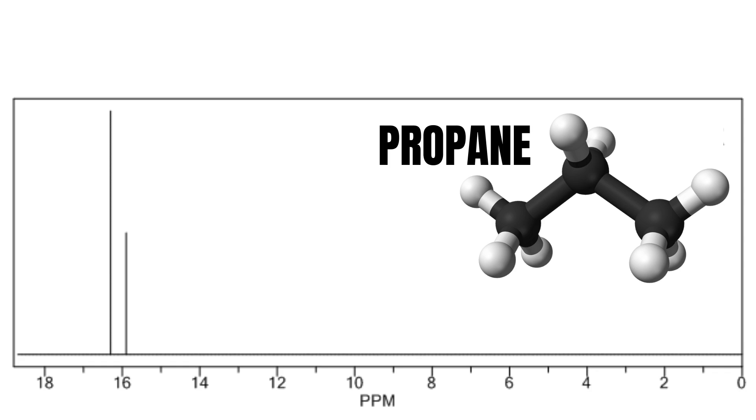So there are three carbons but only two peaks. This is because the carbons on both ends share an identical chemical environment, meaning that they will be equally chemically shifted and added to each other.